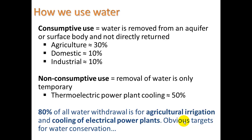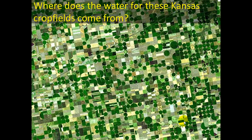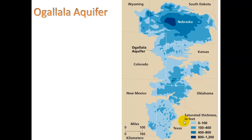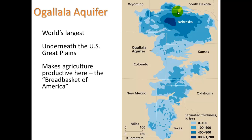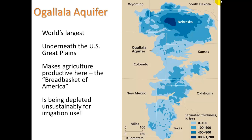Where does the water for Kansas crop fields come from? This satellite image shows circular crop fields. The answer is the ground — there is a huge aquifer, one of the biggest in the world, under the Great Plains: Nebraska, Kansas, Oklahoma, down into Texas. It provides agricultural productivity for the Breadbasket of America, where we grow so much of our grain.